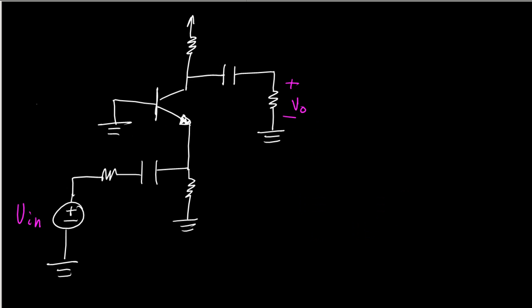Now we have this one. We have the base here, the collector, the emitter. The output is connected to the collector, the input is connected to the emitter, so this is a common base.